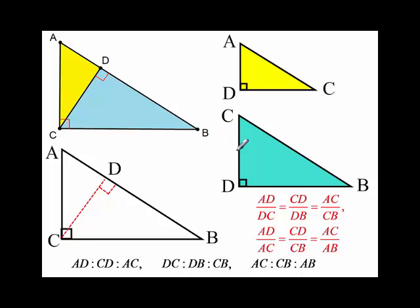So AD, look, short leg, CD, short leg, and for this other triangle, the short leg AC, they're all going to be the same ratios.